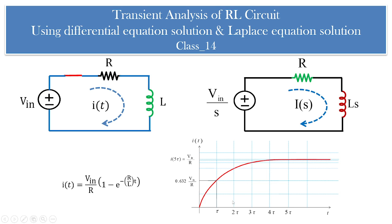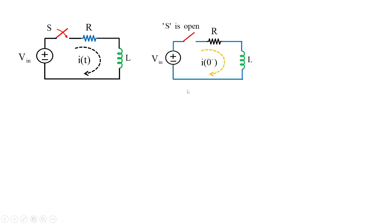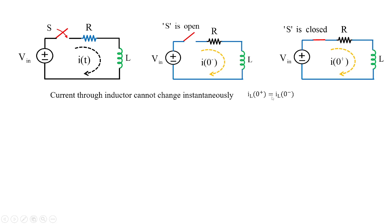The graph of i(t) is exponentially rising — we have already seen this in previous classes. Before proceeding, keep in mind that when the switch is open, current is not flowing, so I(0-) is zero (open circuit). Immediately when the switch is closed at t = 0+, since current through an inductor cannot change instantaneously, both I_L(0+) and I_L(0-) equal zero.